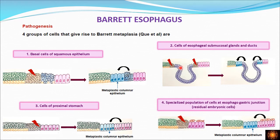The second group of cells is the cells of the esophageal submucosal glands and ducts. Whenever the adjacent squamous epithelium is injured, these cells of the submucosal glands or ducts start differentiating into metaplastic columnar epithelium.